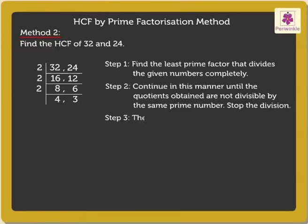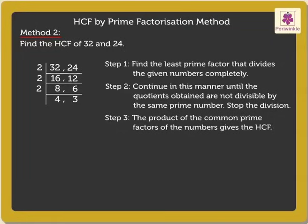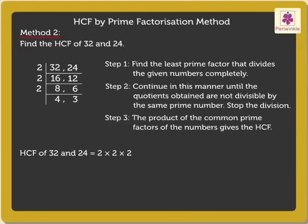Step 3: The product of the common prime factors of the numbers gives the HCF. The numbers we wrote on the left are the common prime factors. Thus, the HCF of 32 and 24 is equal to 2 × 2 × 2 = 8.